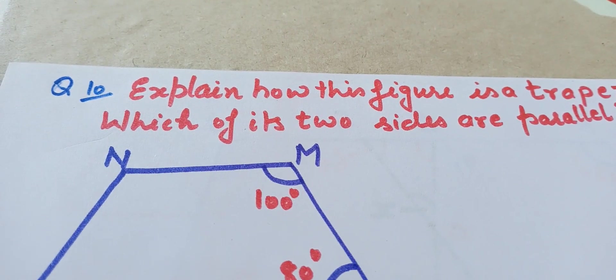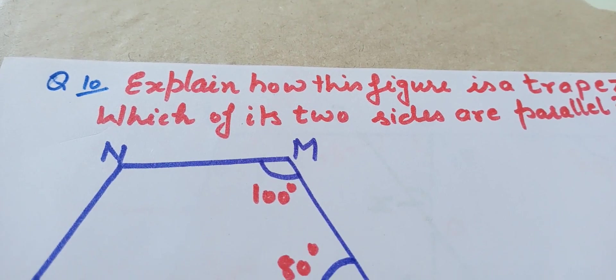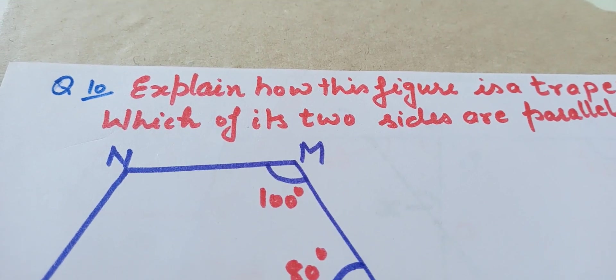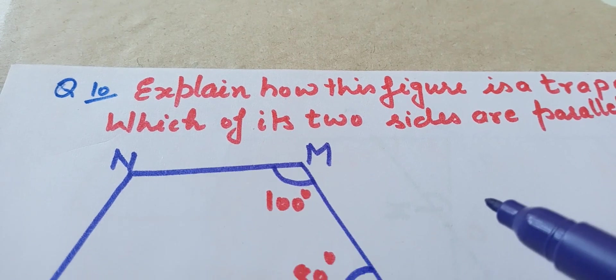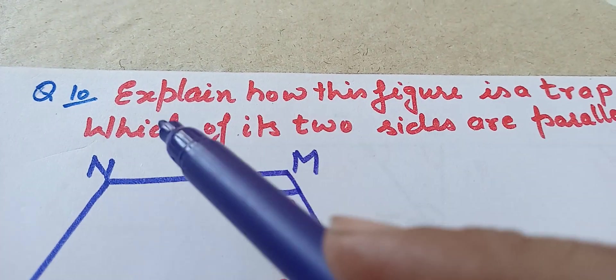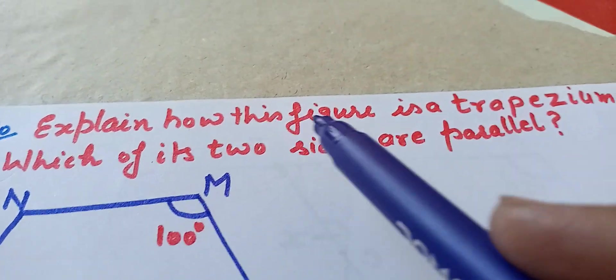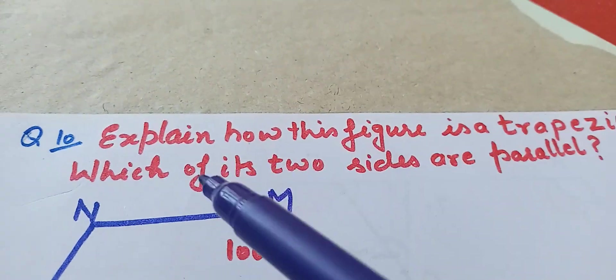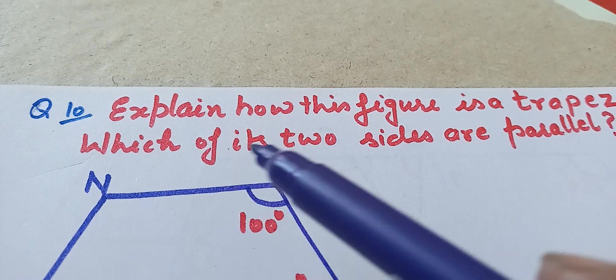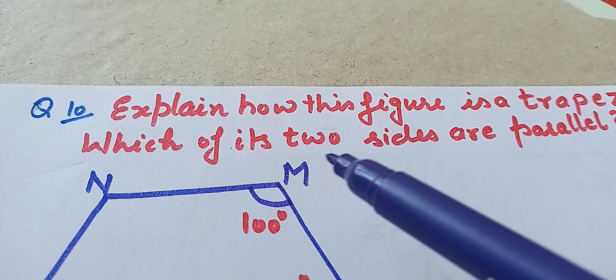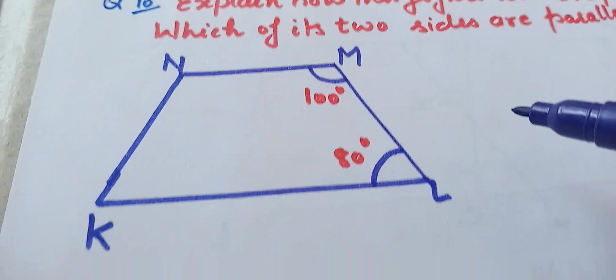Good morning students. Now we will start question number 10 of exercise 3.3: Explain how this figure is a trapezium and which of its two sides are parallel.